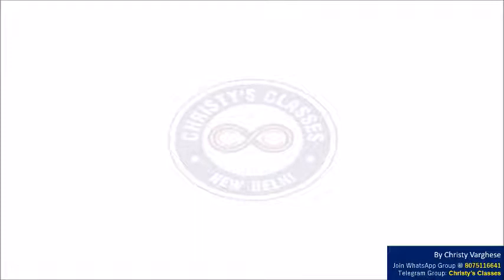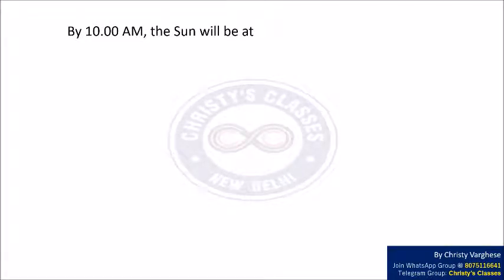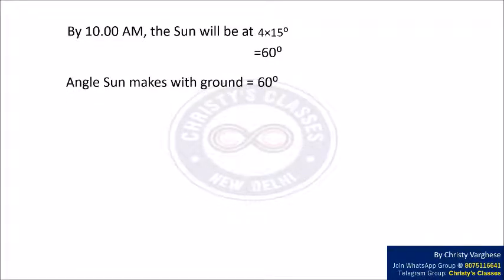First, consider 10 a.m. We are going to find the angle covered by the sun by 10 a.m. From 6 a.m. to 10 a.m. there are 4 hours, and the angle covered per hour is 15 degrees. Therefore, by 10 a.m. the sun will be at 4 × 15 = 60 degrees, so the angle the sun makes with the ground is equal to 60 degrees.